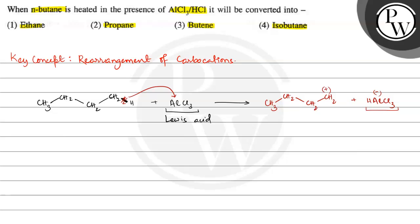So this carbocation can undergo a rearrangement reaction. We can represent this CH2 like this: CH single bond H. Now, this carbon has a positive charge, and this is a 1-degree carbocation. Carbocations, to increase their stability, can show rearrangement reactions. So if this hydrogen shifts here, then we will get a 2-degree carbocation.